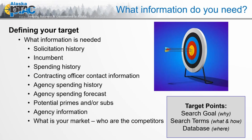The nice thing about federal contracting is that because the federal government is spending tax-based income, there is a requirement for transparency. Except for national security reasons, well over 95% of federal dollars spent is available for public view. We can go into the Federal Procurement Data System and look up contract history. For civilian agencies, that data is available within 24 to 48 hours of a contract award. For Department of Defense, there's about a quarter lag while information is filtered out.